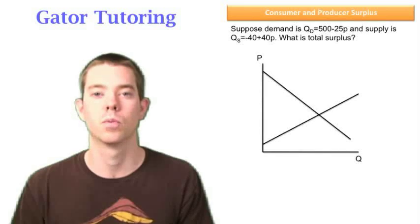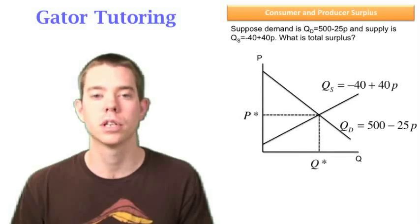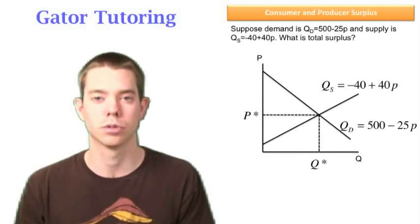Let's take a look at this graph and what these two curves look like. We have demand and we have supply. We know we want to produce at Q star and we want to charge P star. That's where demand equals supply.